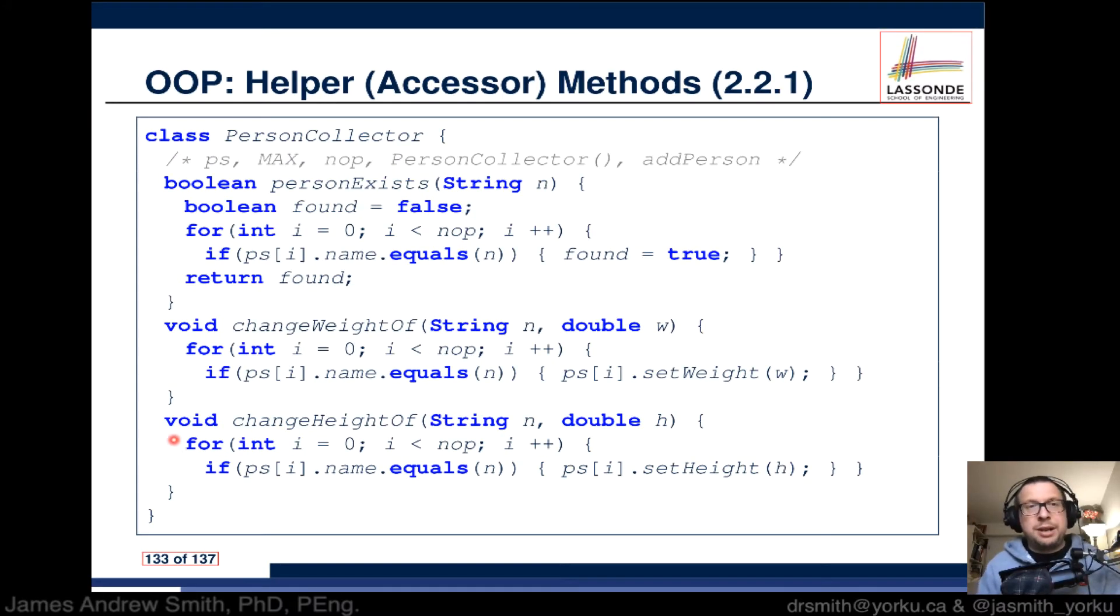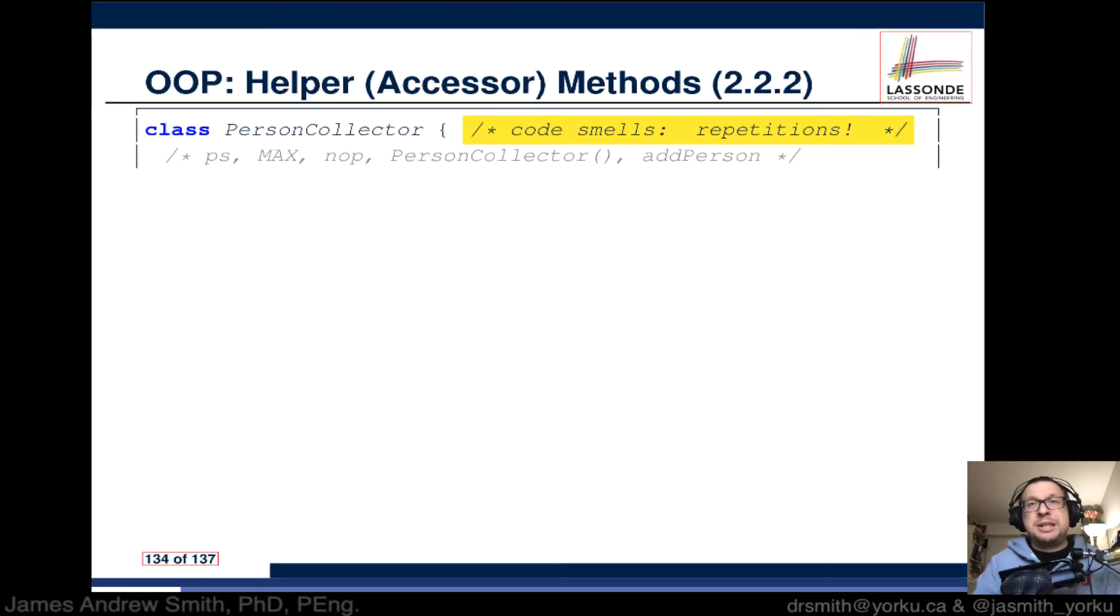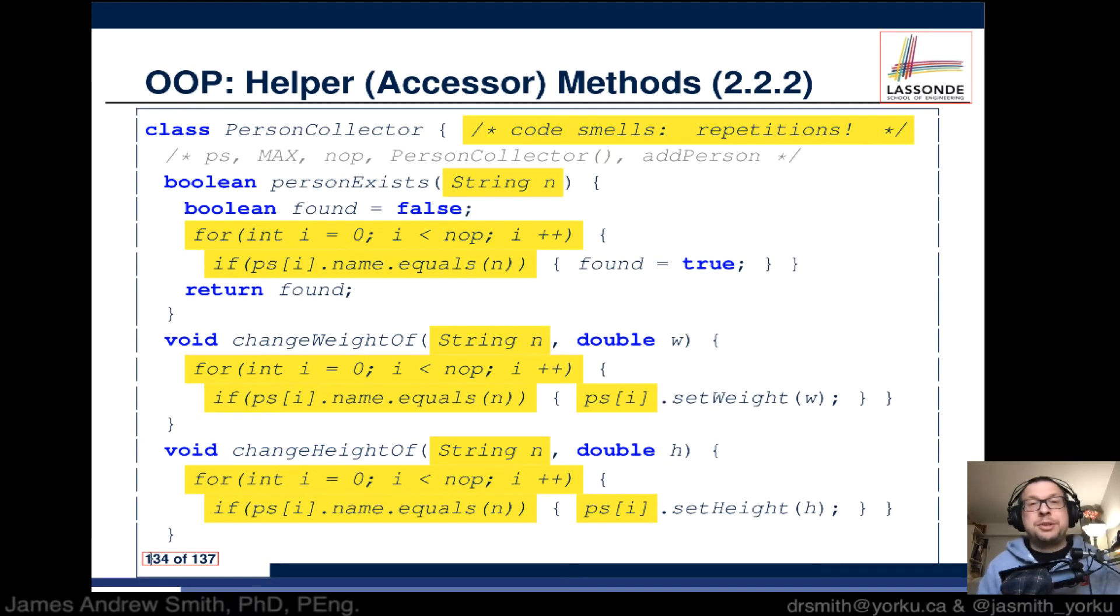Then we have another method change height of, and there's another for loop there. We're seeing these repetitions. For that method and that method, an accessor, a mutator, and another mutator, there's this input argument that's a string each single time. There is this array that's used, there's a for loop and there's an if. For and if, for and if, for and if, all the same structure.